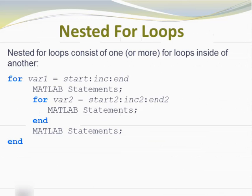Let's start off with the for-loop. Here we can see an example of a nested for-loop where we have an outer for-loop, and as part of the code being performed inside that outer for-loop, we have another for-loop. The outer for-loop has its own separate variable, start, increment, and end. Then there are MATLAB statements which can occur before and after the inner for-loop, which has again its own separate variable, start, increment, and end, along with MATLAB statements specific to that inner for-loop.